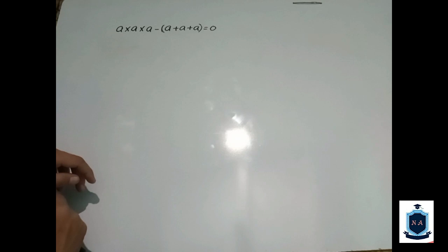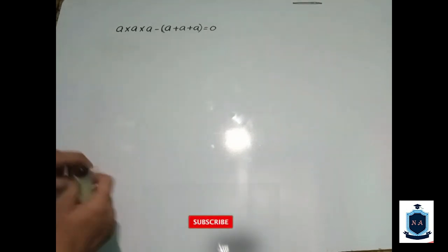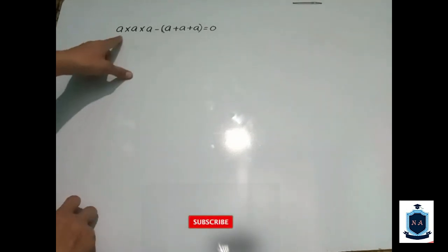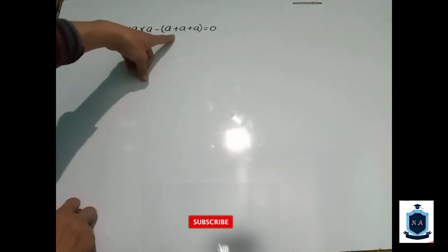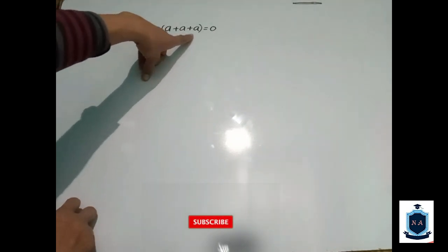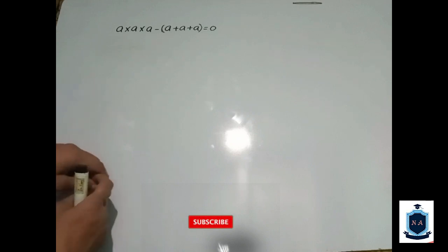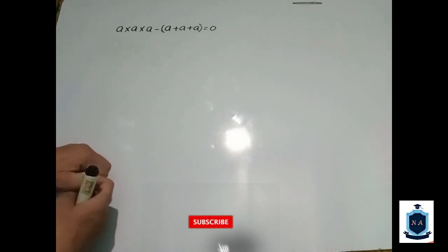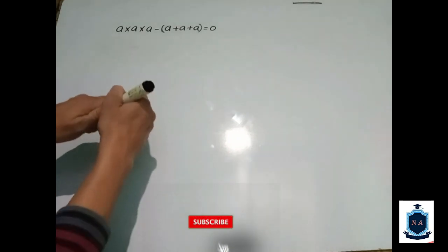Hello, how do you solve the question? Here you can see that a multiply a multiply a, minus a plus a plus a, which is equal to zero. Before solving the question, please don't forget to give thumbs up. Let's go ahead and start with the solution.